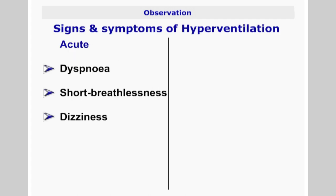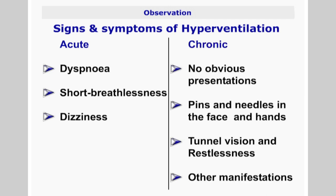The patient may complain of dyspnea, shortness of breath, and dizziness. Chronic hyperventilation may not have obvious presentations, but in acute hyperventilation the patient may report pins and needles in the face and hands, tunnel vision, and may appear restless. There are many other immediate and long-term manifestations in this often underdiagnosed state.